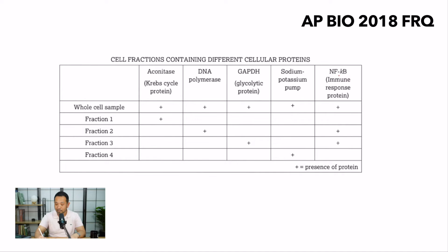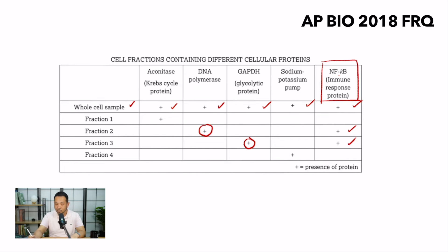The question involved a protein called NF-κB, which is an immune response protein. They want you to determine where it is in the cell. In the whole cell sample, proteins like aconitase (a Krebs cycle protein), DNA polymerase, GAPDH (a glycolytic protein), sodium-potassium pump, and NF-κB are all found — because the whole cell sample contains everything. However, NF-κB exists in fraction two and fraction three. The way to solve this mystery is by isolating where GAPDH and DNA polymerase are located, which will simultaneously reveal where NF-κB is found.